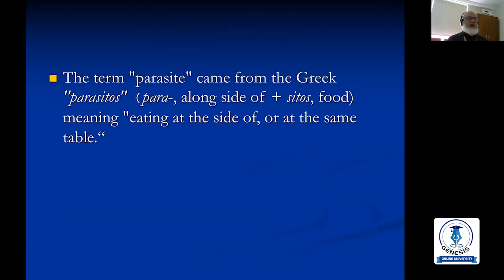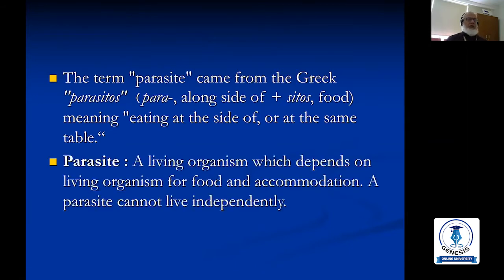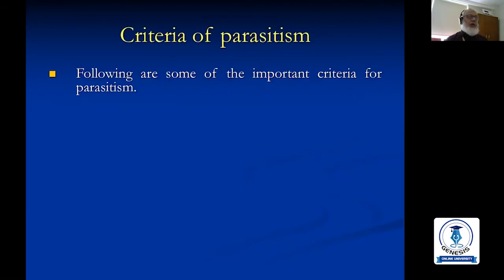The term 'parasite' came from the Greek word 'parasitos.' 'Para' means 'along' and 'sitos' means 'food,' giving the meaning 'eating at the side of' or 'at the same table.' A parasite is a living organism which depends on another living organism for food and accommodation, and cannot live independently.